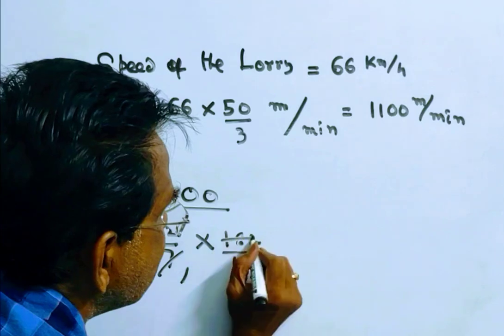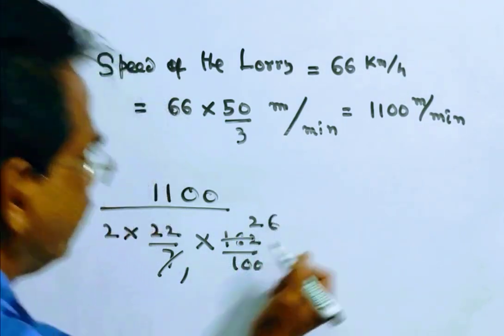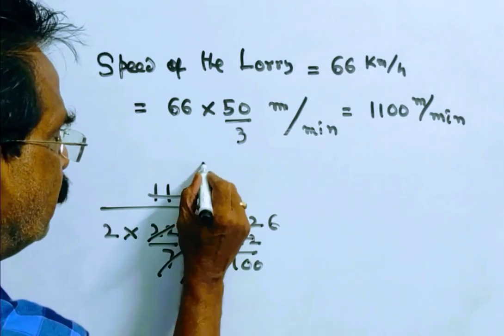7 ones 7, 7 twos 14, 7 sixes 42. 22 ones 22, 50s.